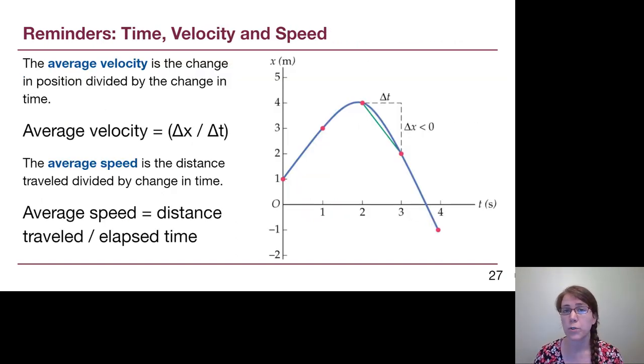What we also finished the previous video with was recognizing that if we draw a line connecting two points on a position time graph, the slope of that line is average velocity. So we have the description of average velocity Δx over Δt. Average speed is a little bit more complicated, and if we go through a part of the motion where the object turns around or changes direction, then average speed is much more complicated in that graph form than average velocity is.